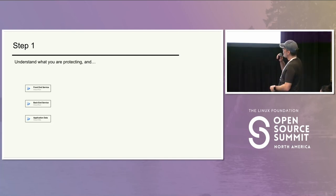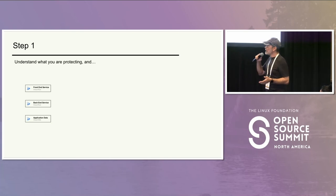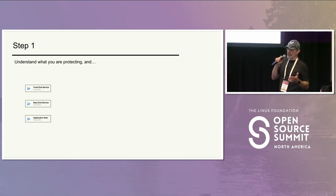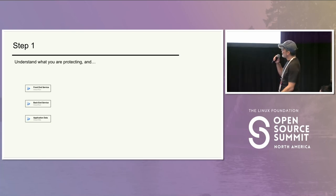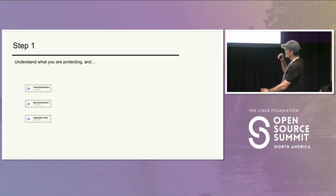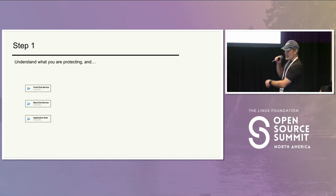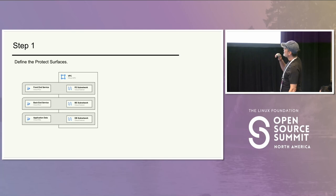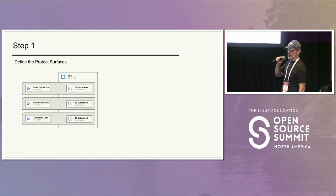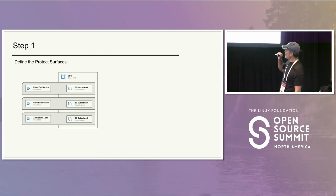The first thing as John said is we have to go to step one: what is it we're protecting? If you're building even a basic secure web application that only your users will access, we need to understand the DAAS elements that compose it. We've got a front-end service, a back-end service, and the application data which may live in a managed SQL instance. We then define protect surfaces — each needs a network that's isolated, micro-segmented from each of its counterparts.